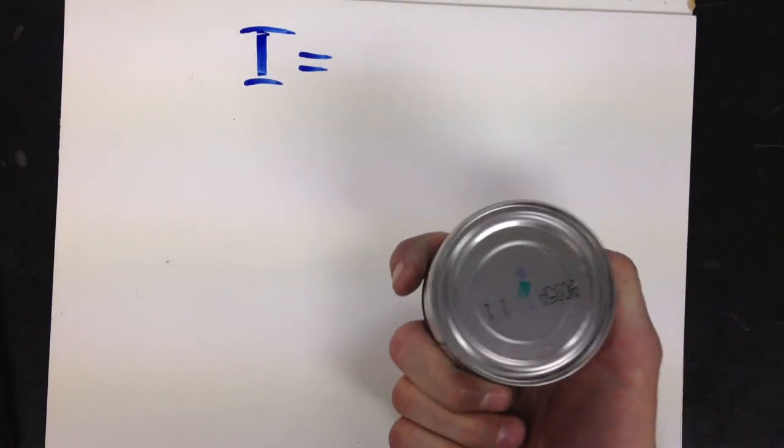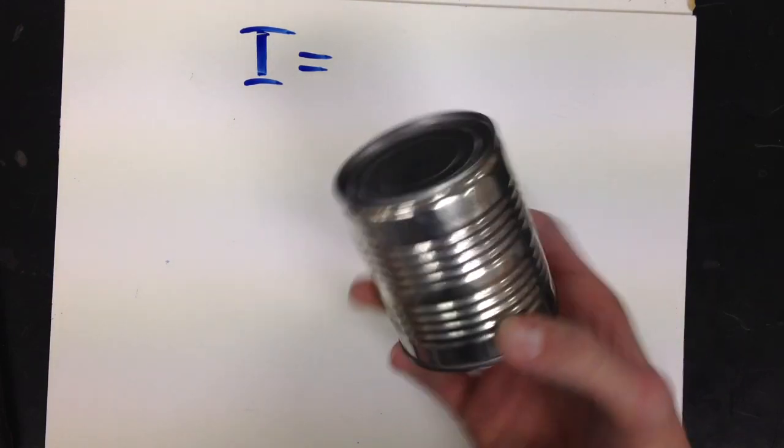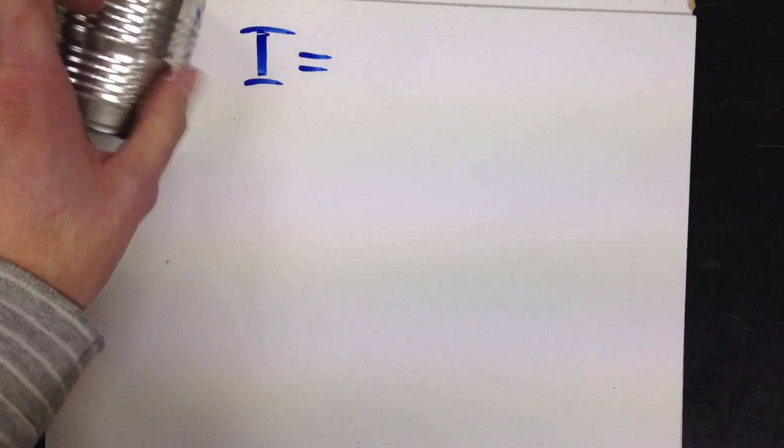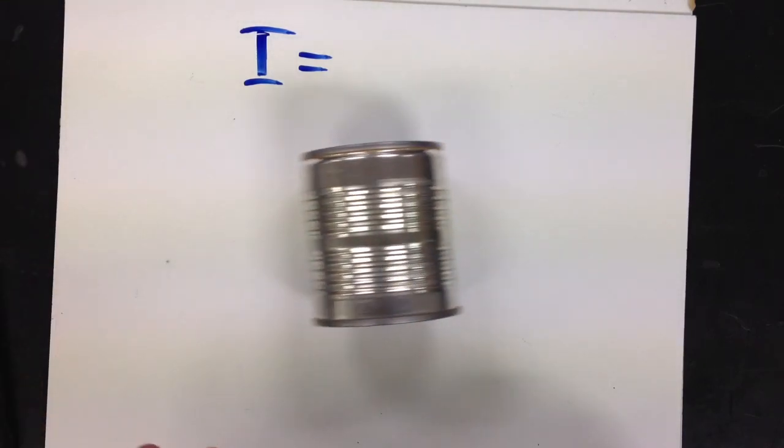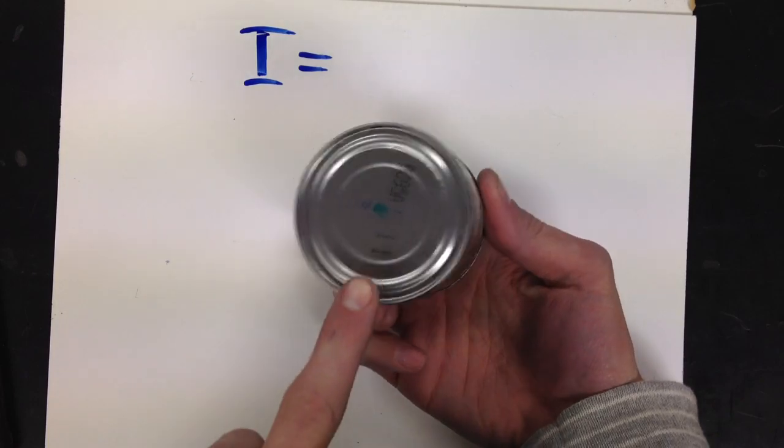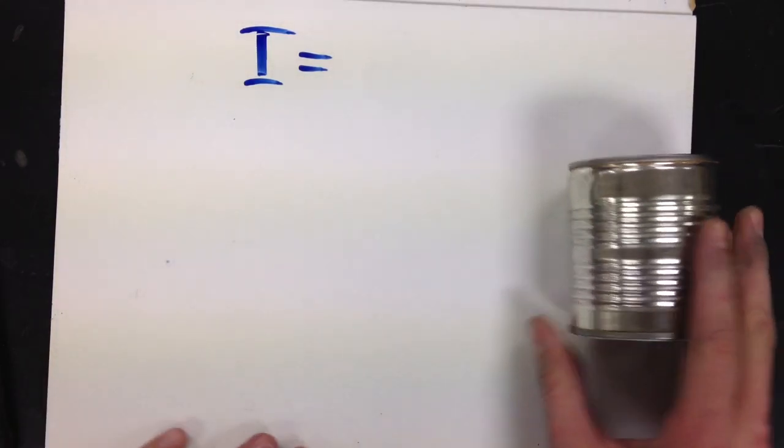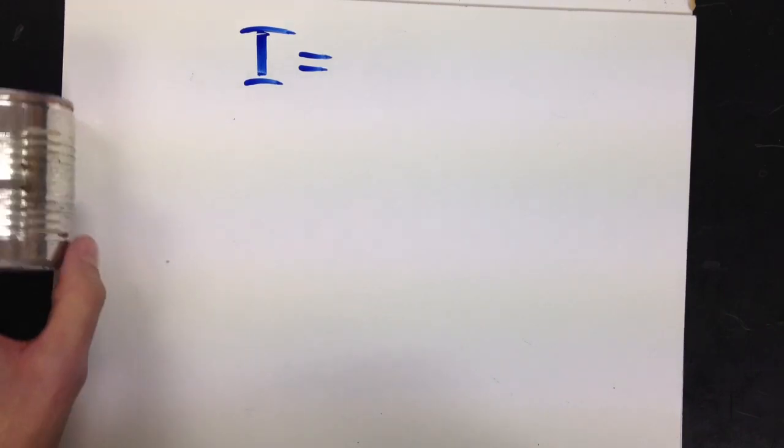So we're going to start by talking about a solid cylinder. Here I have just a metal can, and we're going to imagine that the can is just rolling along. Its axis of rotation is the green dot right here, just going straight through to the other side, rolling across ever so nicely.